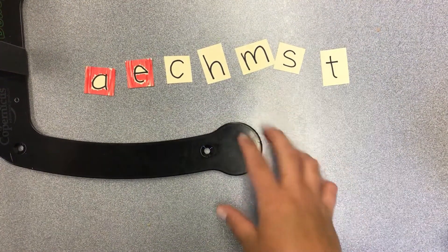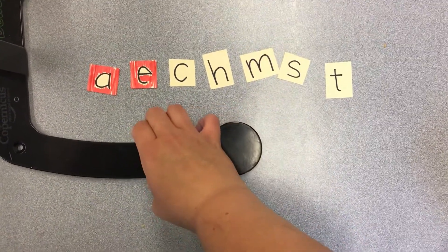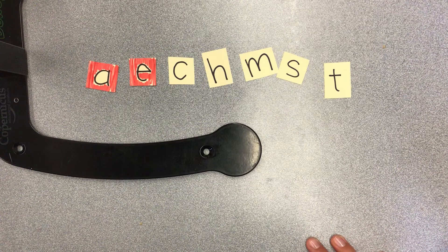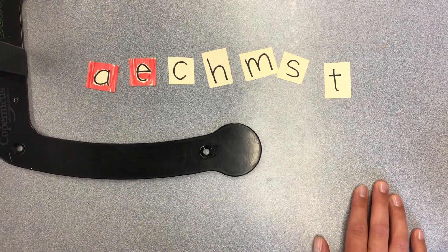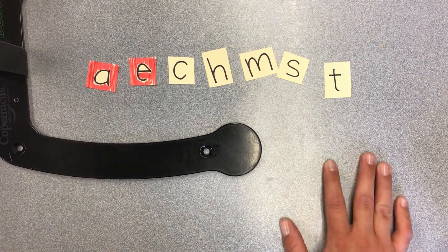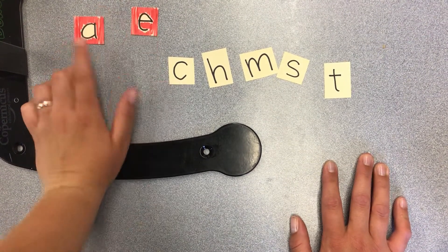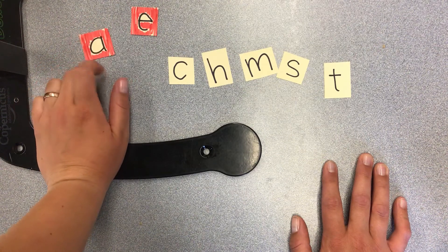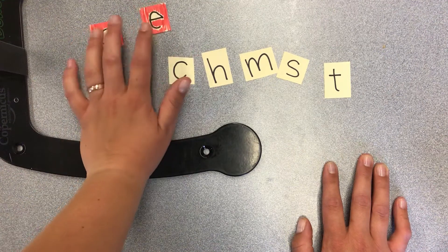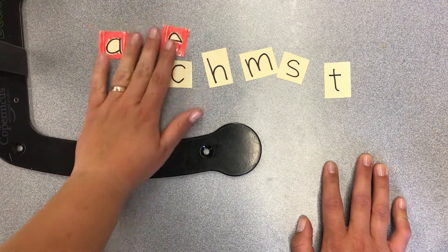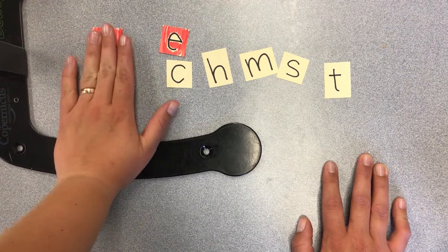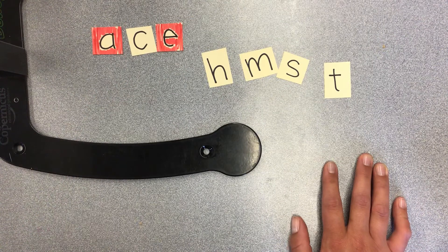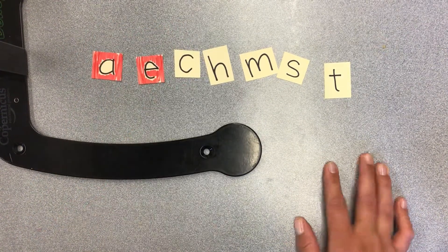Hey grade two, welcome to another week of making words. We are on to week eight already. For today, we are not going to be introducing any new rules. We're still reviewing the same rule from last week, which is the long A sound. The way we're making that this week is with another bossy E. We need to have the letter A, a consonant in between, and then a bossy E on the end. There are also some short A sounds, which is just the letter A on its own.